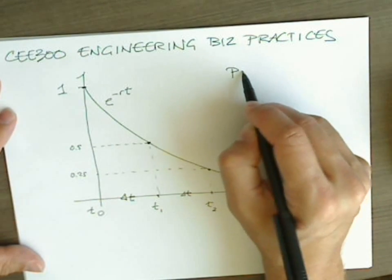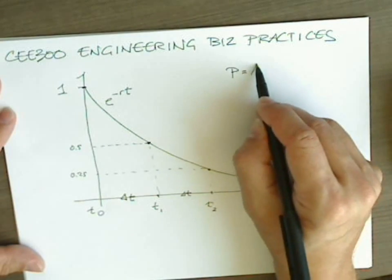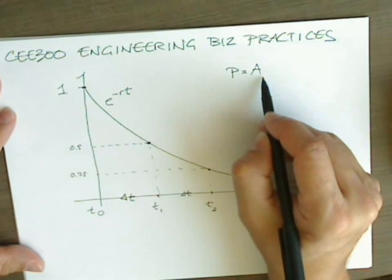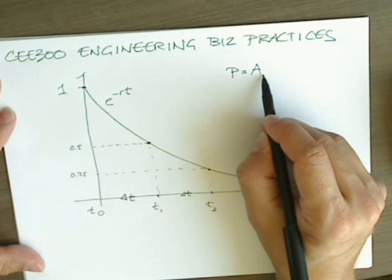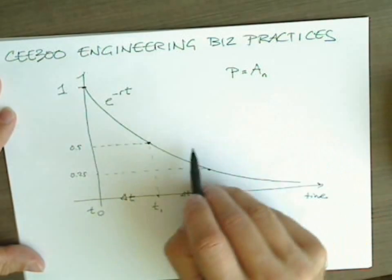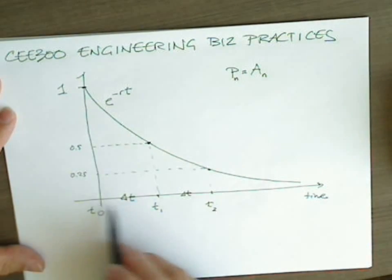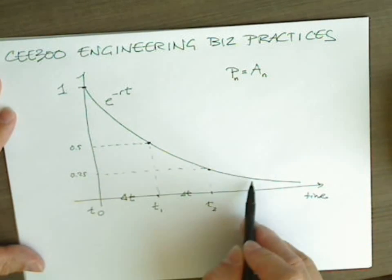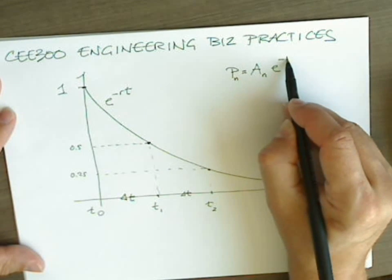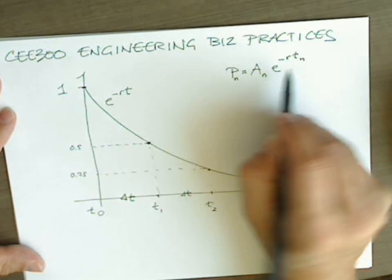We know that the present value of any future payment, we'll call a, and I'm going to call this a1, or a2, or a to the n. So this is the present value of any one of these payments that we have to discount at this time, is going to be e to the negative r, t, n.